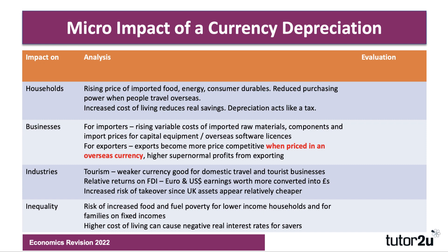For households, if the currency falls — if the pound falls against the dollar — then the cost of the things that we import, priced in pounds, will go up. We'll see an increase in the price of imported foods and energy products, such as importing gas. Consumer durables like washing machines and smartphones will become more expensive. That's going to cut real incomes, affecting households' real purchasing power both in terms of buying imports and overseas travel. If you have savings, higher prices reduce the real interest rate effectively. In that sense, depreciation of the currency acts a little bit like a tax.